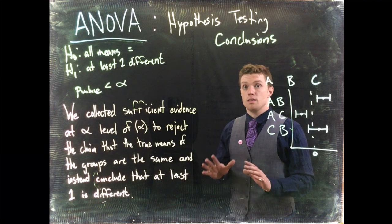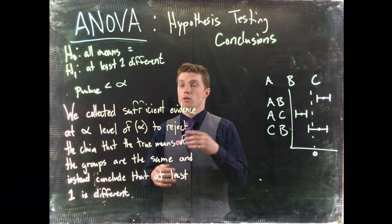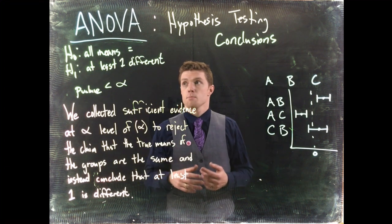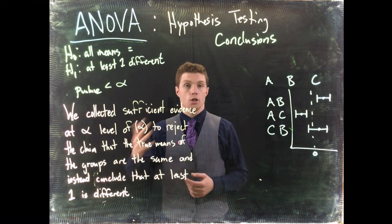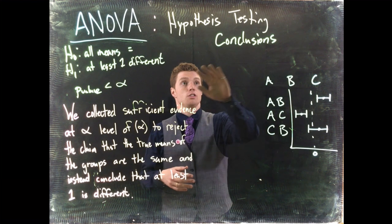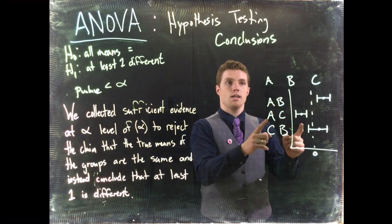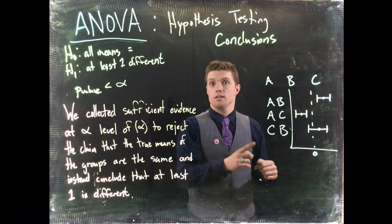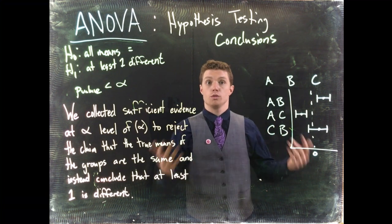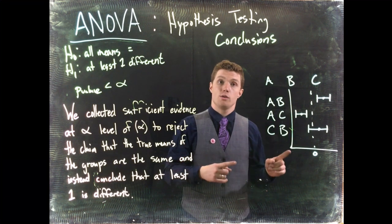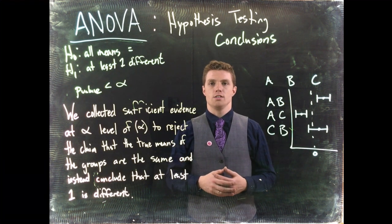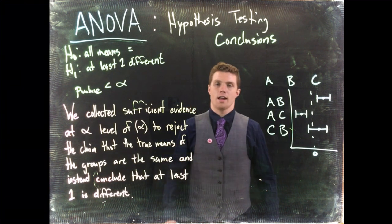That's all the ANOVA can do—say that at least one is different. So here we were able to conclude that at least one was different. If we want to answer questions about which one is biggest, which is smallest, or which specific ones are different, we need to use post hoc tests. We'll look at confidence intervals and take care of that in our next video.